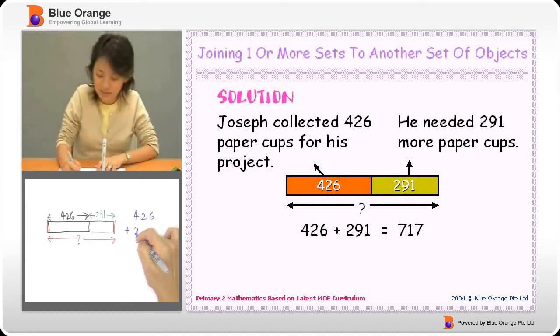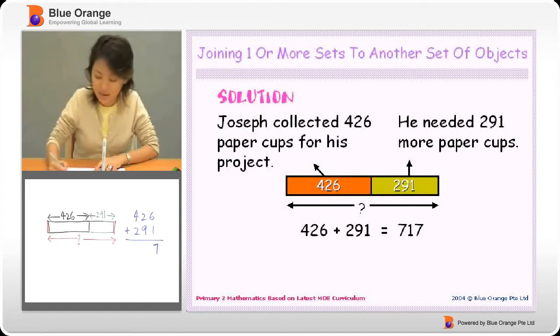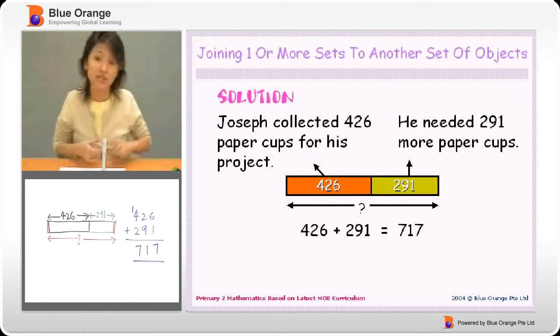426 plus 291. 6 plus 1 is 7. 2 plus 9 is 11. 1 plus 4 is 5. Plus 2 is 7. So what do we have? 717.